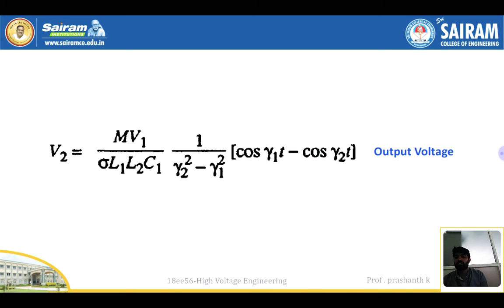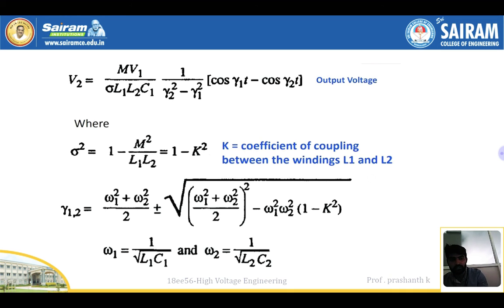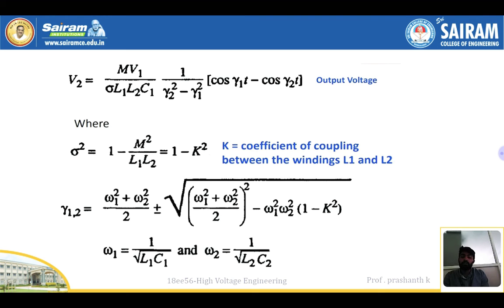The output voltage V2 is expressed as: V2 = (M / (γ2² − γ1²)) × √(L1·L2·C1) × (cos(γ1·t) − cos(γ2·t)), where M is the mutual inductance between the two windings and V1 is the supply voltage. The coupling coefficient sigma (σ) = M / √(L1·L2). The frequencies are: γ1,2 = √[(ω1² + ω2²)/2 ± √((ω1² + ω2²)²/4 − ω1²ω2²(1−σ²))], and ω = 1/√(L2·C2).